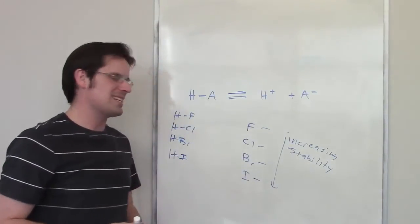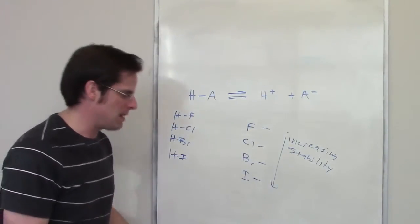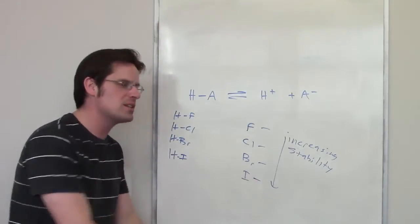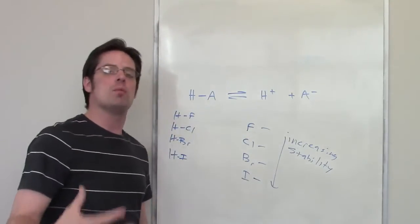Why in the world is an I- so stable compared to a Br-, which is more stable than a Cl-, which is more stable than an F-? It is, once again, all based on size.